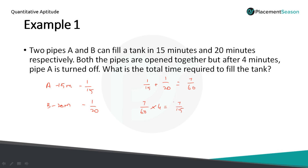At the end of 4 minutes, 7 parts are filled out of 15 parts. Pipe A is then turned off, so the remaining part is filled only by B. Total work equals 1, minus 7 by 15 already filled, so the remaining part is 8 by 15. This 8 by 15 is filled by B alone.